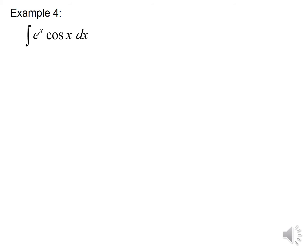Let's do this problem — it's on page two of your notes, the first problem at the top right. Notice that e to the X and cosine X both differentiate and integrate easily and continuously, so it really doesn't matter which one we choose for U or dV.